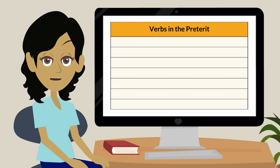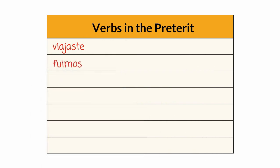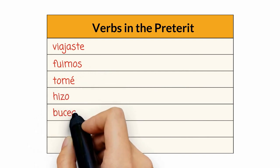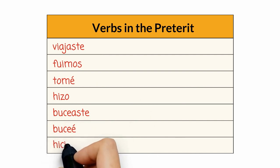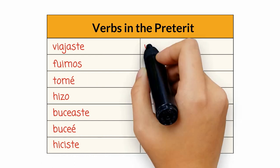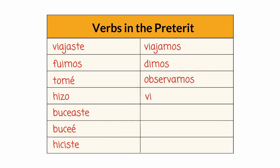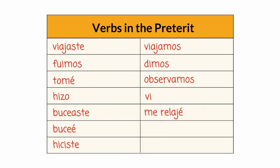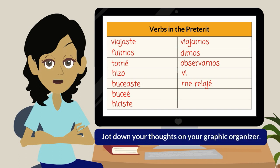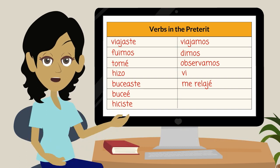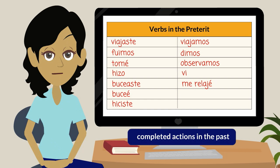Let's check the verbs in the preterite tense first: viajaste, fuimos, tomé, hizo, buceé, hiciste, viajamos, dimos, observamos, vi, me relajé. What do you notice about the actions that the preterite verbs are describing? Jot down your thoughts on your graphic organizer. If you were thinking that these verbs are completed actions in the past, you are correct. The preterite describes actions that were completed in one moment in time.